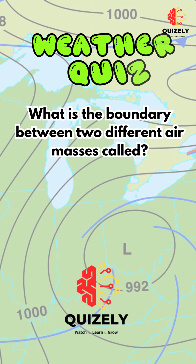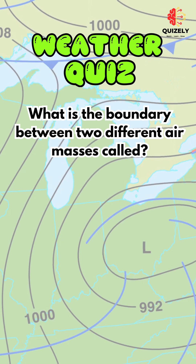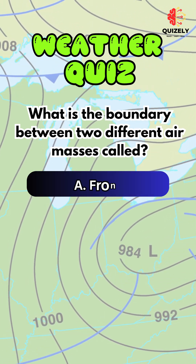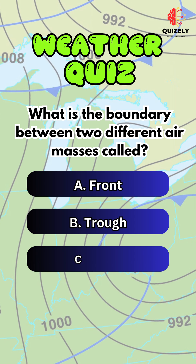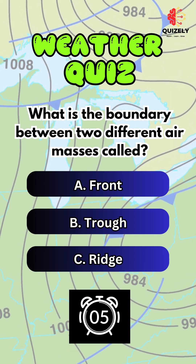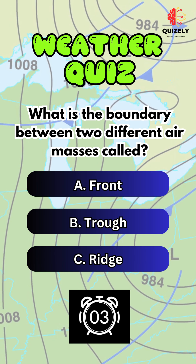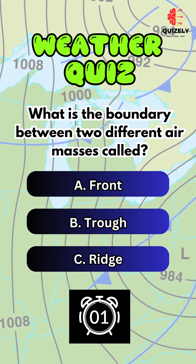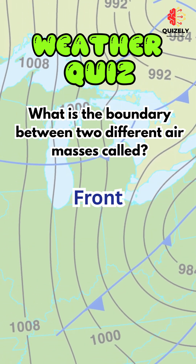What is the boundary between two different airmasses called? A. Front. B. Trough. C. Ridge. Correct answer is front.